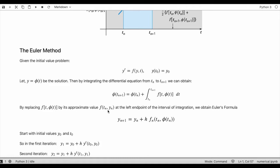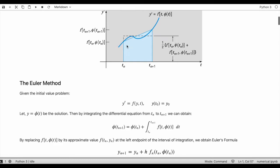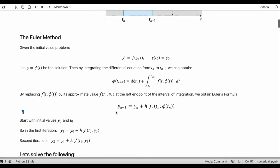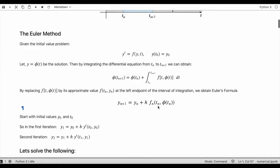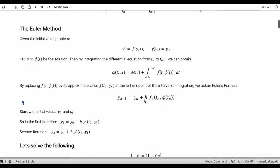By replacing this integrand by its approximate value f evaluated at t_n and y_n at the left endpoint of the interval of integration, we can obtain the Euler formula which is given by y_{n+1} equals y_n plus h times f_n, which is basically the derivative evaluated at that time t and that previous value of y that we know, and h here represents the step size.